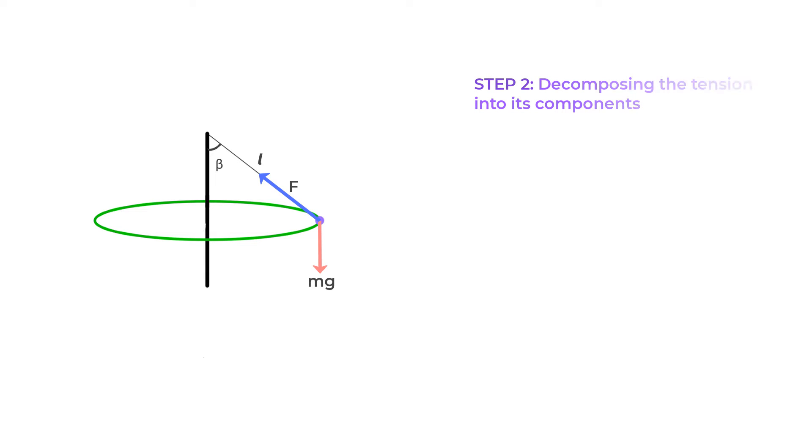Step two is decomposing the tension into its respective components. So F can be broken down into a vertical component F cos beta and a horizontal component F sin beta.